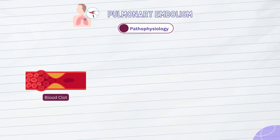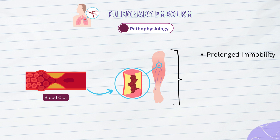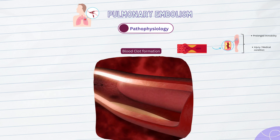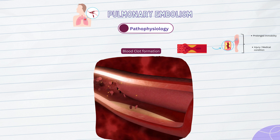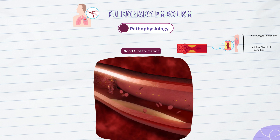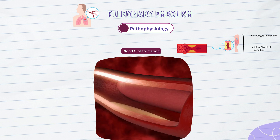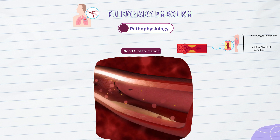A number of elements play a role in the complicated process of blood clot development. Blood clots in the deep leg veins are frequently the site of pulmonary embolism. This could happen for a variety of causes, like prolonged immobility, an injury, or certain medical conditions that encourage blood clotting. Damage to the blood vessel's inner lining frequently starts the clotting process, exposing underlying tissues and initiating the clotting cascade. A fibrin clot forms as a result of a number of chemical processes. The fibrin clot acts like a net, capturing platelets and red blood cells to form a stable blood clot.